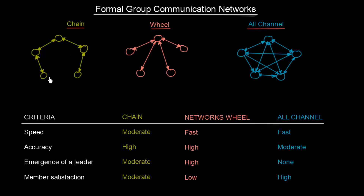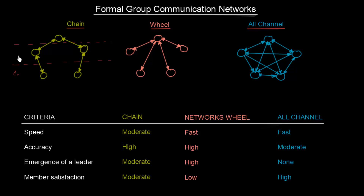We have the chain. The members within the chain communication network are communicating one to another. I always imagine it as having hierarchical levels — this is an example of three hierarchical levels within an organization. At the bottom we have the frontline personnel, the lowest hierarchical level; then we have the first line of managers; and then this would be our CEO. So we have the first, second, and third hierarchical levels.